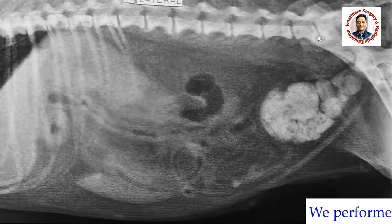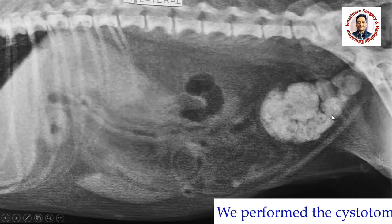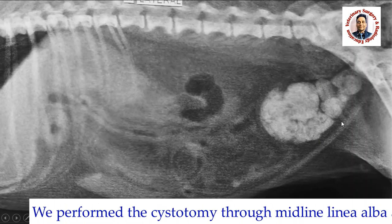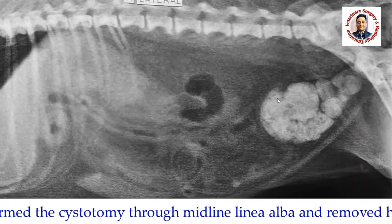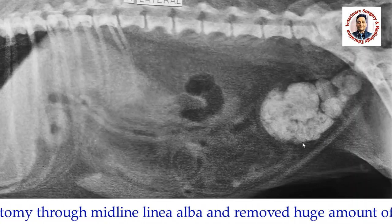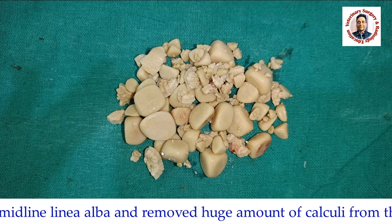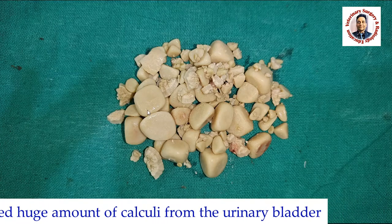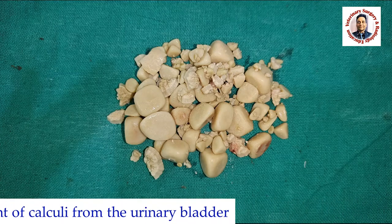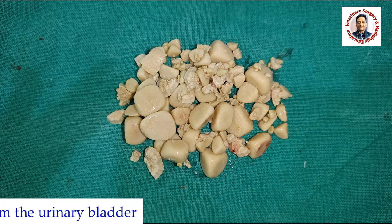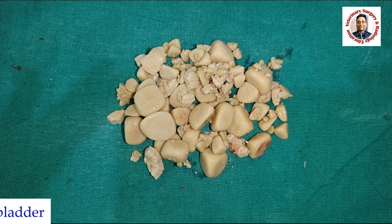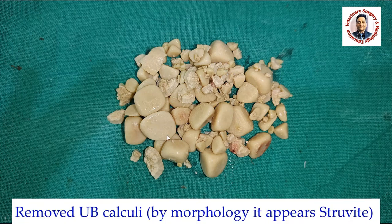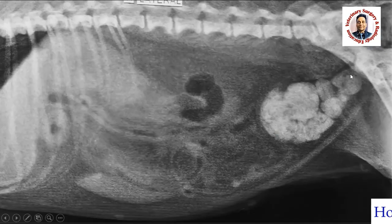We performed a cystotomy through the midline linea alba and removed these calculi. You could see here — these are the calculi removed from the urinary bladder. If you observe the surface, color, and texture, these calculi are struvite in nature.